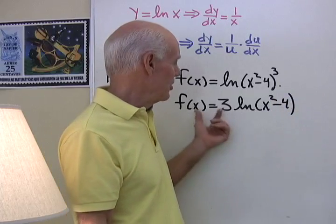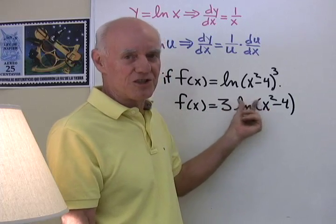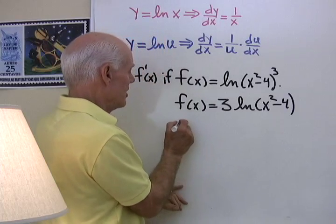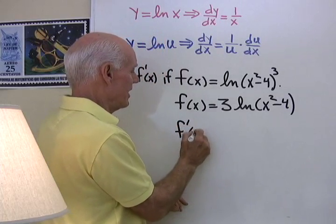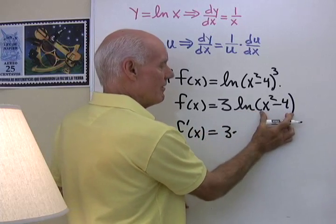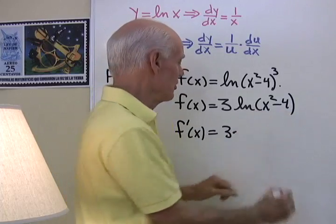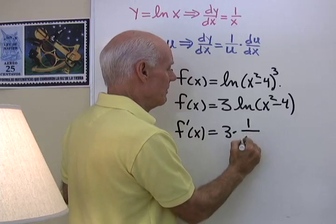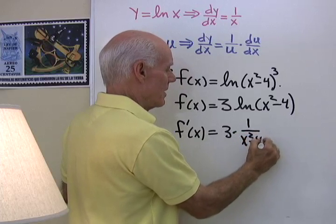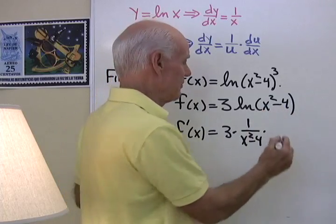Okay, so now I'm going to differentiate. The derivative of a constant times a function is a constant times the derivative of the function. So f prime of x is going to be 3 times the derivative of log this, and this is our u term right here, so it's 1 over u times the derivative of u. Well the derivative of x squared minus 4 is just going to be 2x.